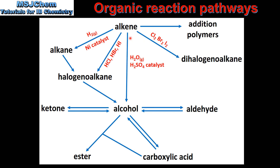The next reaction is hydration, in which an alkene reacts with steam in the presence of a sulfuric acid catalyst to form an alcohol. And finally, alkenes can undergo polymerization to form addition polymers such as polyethene.